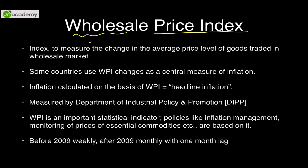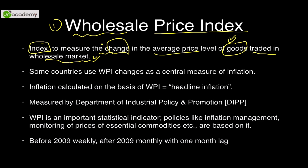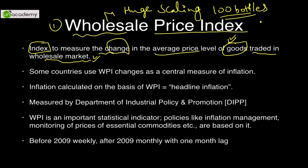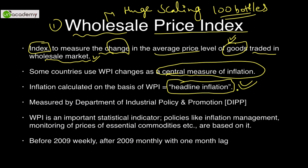The Wholesale Price Index is an index — basically a ratio multiplied by 100 — that measures the change in the average price level of goods. The keyword is 'goods': it does not include services. It covers goods traded in the wholesale market. Wholesale means large-scale transactions, so 100 bottles sold wholesale will be cheaper per unit than at the individual consumer level. WPI can be used as a central measure of inflation in certain countries.